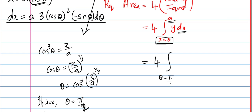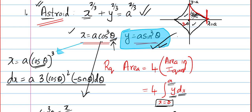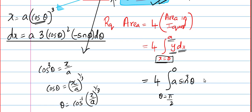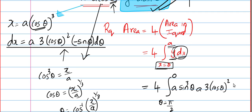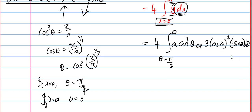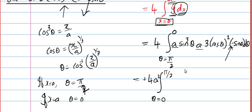So we have 4 times the integral from θ = π/2 to 0 of a sin³θ · 3a cos²θ · (−sinθ) dθ. There is a minus sign here, so we flip the limits — the integral becomes positive. Then a × a = a², and pulling out constants gives us 12a² times the integral of sin⁴θ cos²θ dθ.